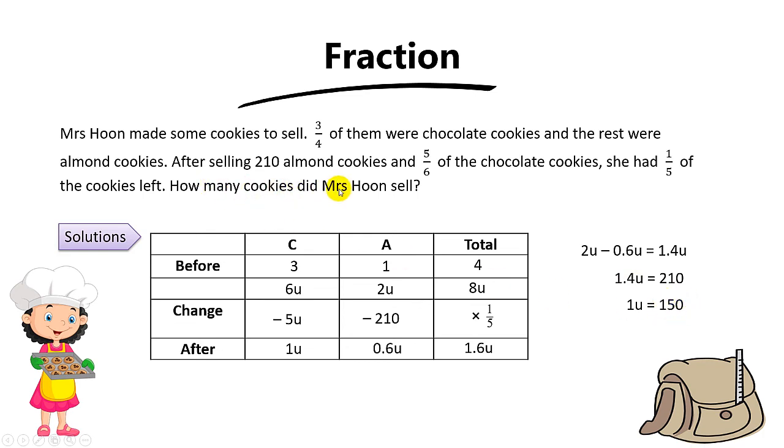Now the question asks how many cookies did she sell. You take 150 times 5, then plus 210. This gives the total cookies she sold, which is 960. Of course, instead of doing it this way, you can also take 4.5 times 8 units, because she has 1.5 of the cookies left, meaning she sells 4.5 of the 8 units. If you take 8 times 150 then times 4.5, you should also get the same answer of 960.